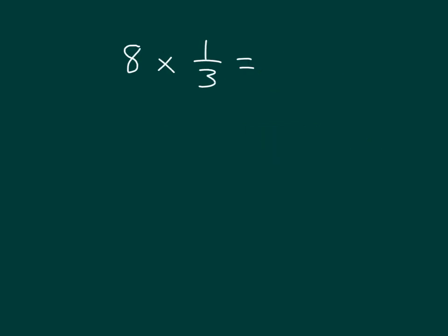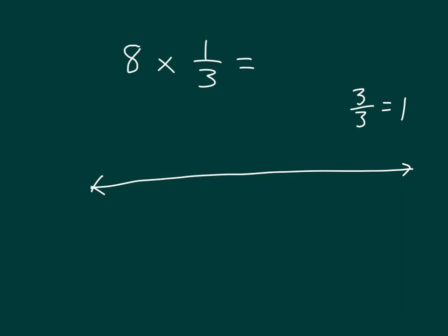Now let's look at 8 times 1/3. We know that how many thirds equal a whole? Right — 3 thirds. So let's break apart a number line into thirds. We have 0 thirds, then 3 thirds to count by wholes, 6 thirds which also equals 2, and 9 thirds which also equals 3.